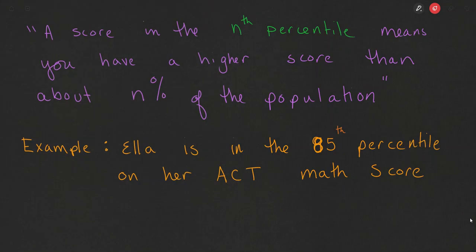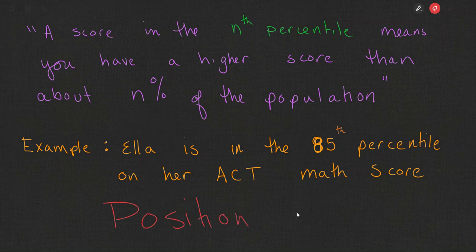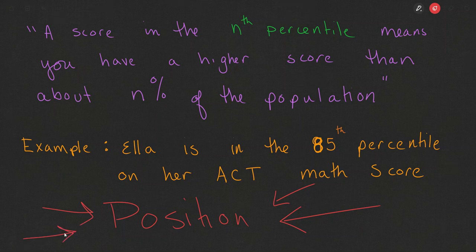Let's talk about what a percentile means. Remember this big keyword that this has to do with position—where a data point, where a piece of data, where the number falls in relation to the others in that set. A score in the nth percentile means that you have a higher score than about n percent of the population. So here's an example.